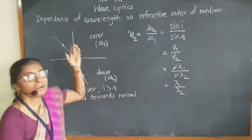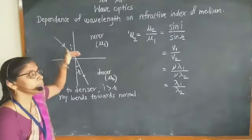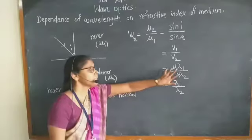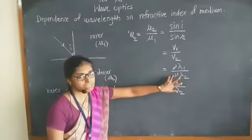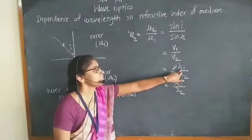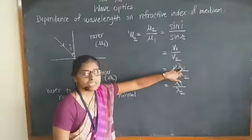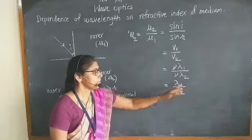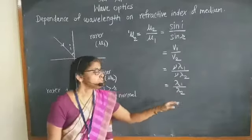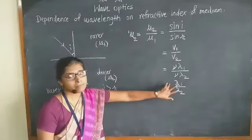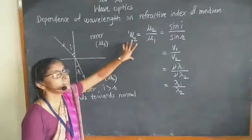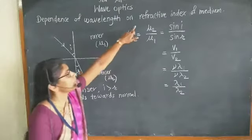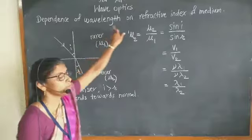Here when ray of light travels from one medium to another medium, its frequency remains constant but its velocity and wavelength change. So we get here formula lambda 1 upon lambda 2. So lambda is nothing but the wavelength of light. So we got here the relation of refractive index and wavelength of light.